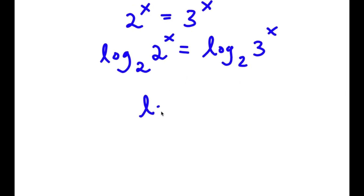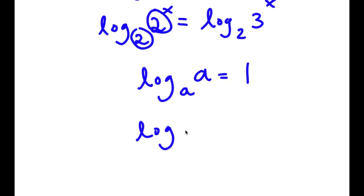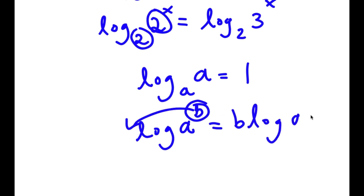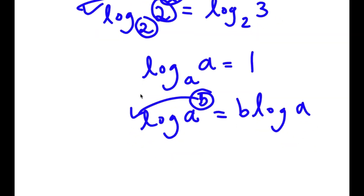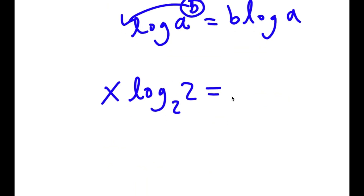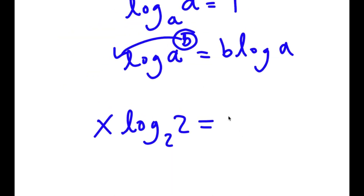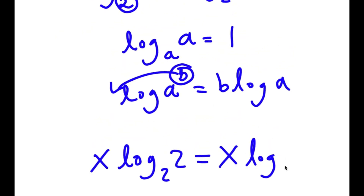Now, if I have something in the form log base a of a, this is simply equal to 1. As you see here, we have log base 2 of 2. But before I cancel these out, if I have something in the form log base a of something to the power of b, I can move this exponent b to the front, so it equals b times log a. In this case, x is the exponent, so I can move it to the front. Now I have x times log base 2 of 2 is equal to x times log base 2 of 3.